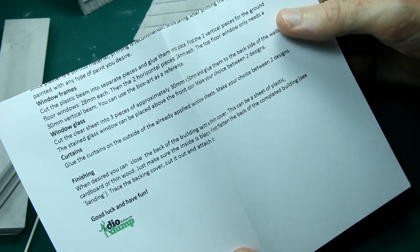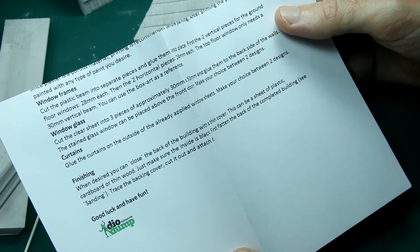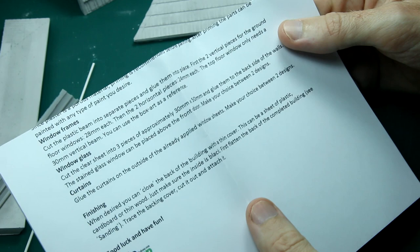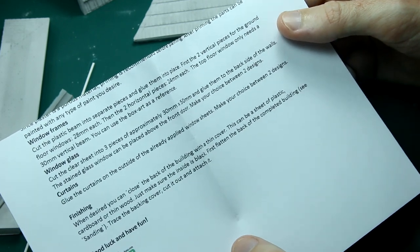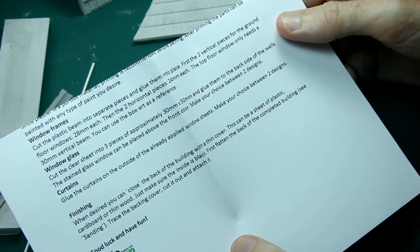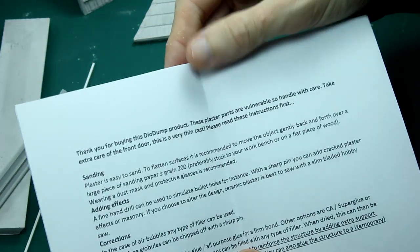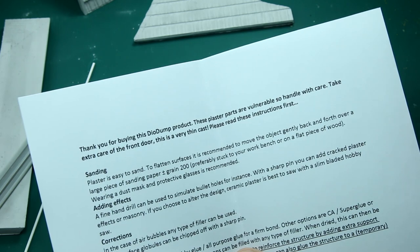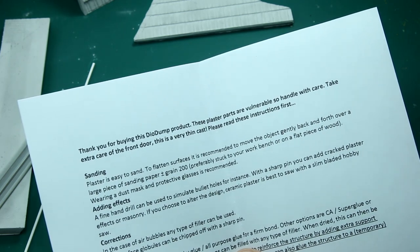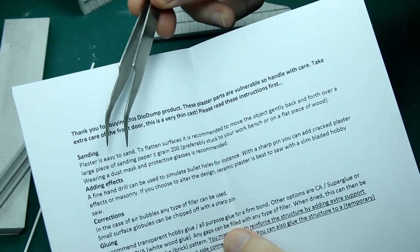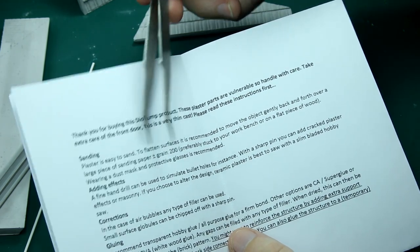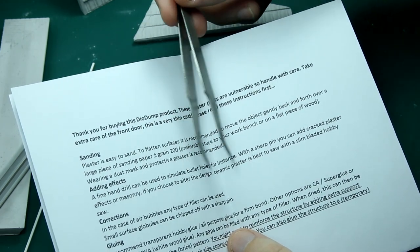The kit also includes instructions, of course. They're not visual instructions. They're purely written, but they do tell you how to deal with all aspects of the kit. So there's a section here on sanding the plaster. There's a section on making any corrections if there's small imperfections. It recommends different types of glue to use, and so on and so forth. So although they're short, the instructions are pretty comprehensive. And you wouldn't need any more than this to build the kit.